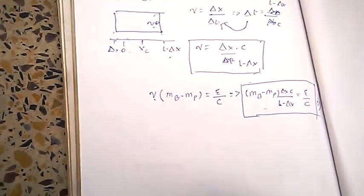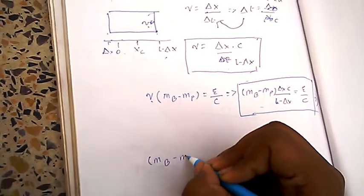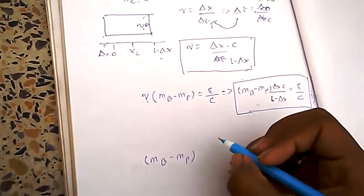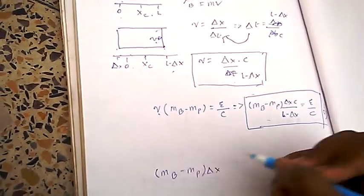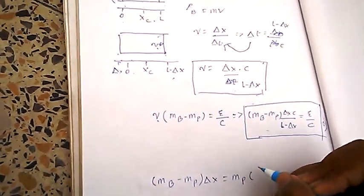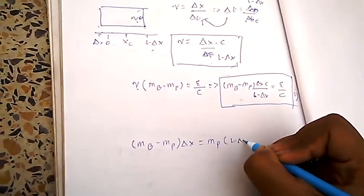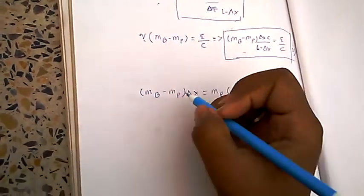So, the mass of the box, into the displacement it covered, is equal to mass of photon, the displacement which it covered, that is L minus delta x.